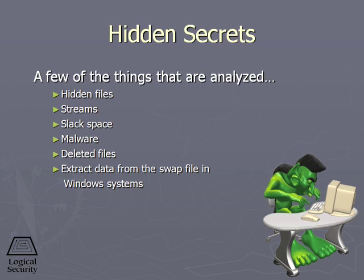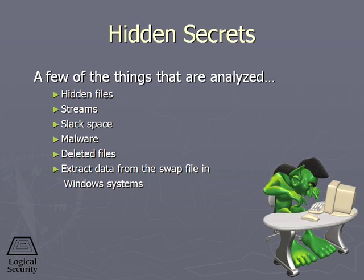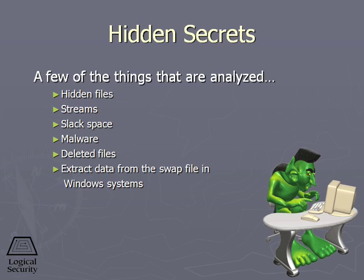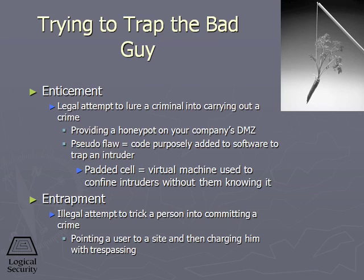Another area the forensics investigator will look for is any malware — root kits or Trojan files that live on the hard drive. We'll also try to extract data out of the swap file. Now, here are two terms you have to have clearly understood — this is while trying to trap the bad guy. We are generally legally allowed to entice bad guys, but we're not allowed to entrap bad guys. Let's understand clearly the difference between these two because this is a moving boundary.